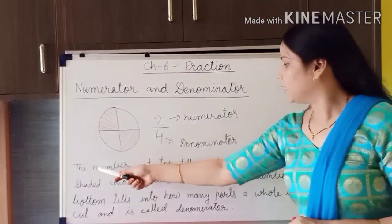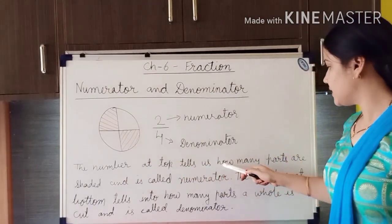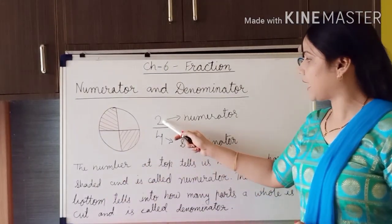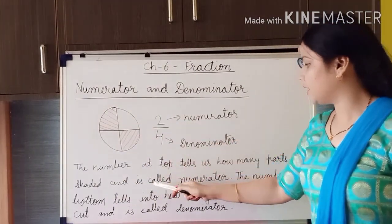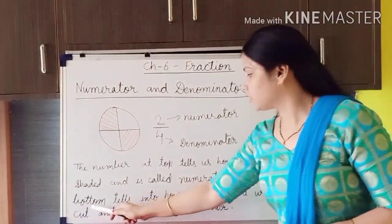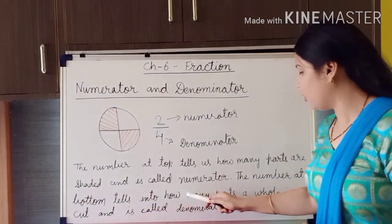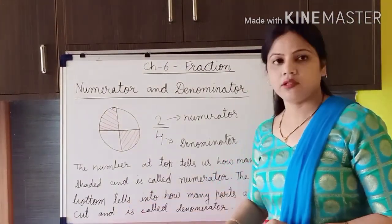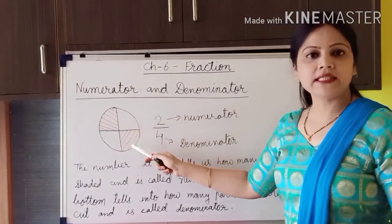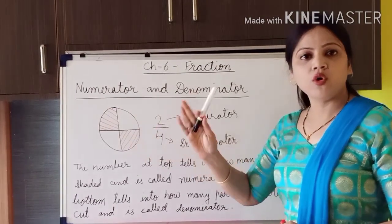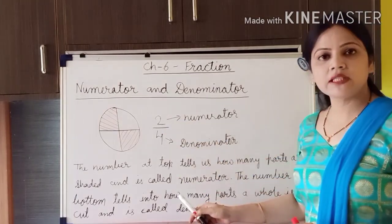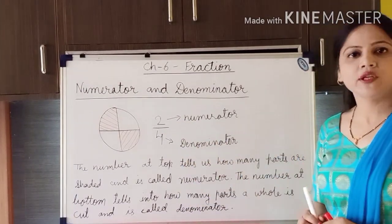The number at the top tells us how many parts are shaded and it is called the numerator. The whole is cut into 4 parts — that number at the bottom is called the denominator. Just pause this video and write these things in your maths copy.